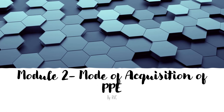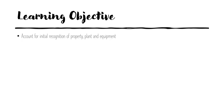Hello class, welcome to module 2. In this module we're going to talk about the different modes of acquisition for property, plant and equipment. Our learning objective for this module is the same as the previous module: to account for the initial recognition of property, plant and equipment, but this time we're going to talk about the different ways to acquire the asset.